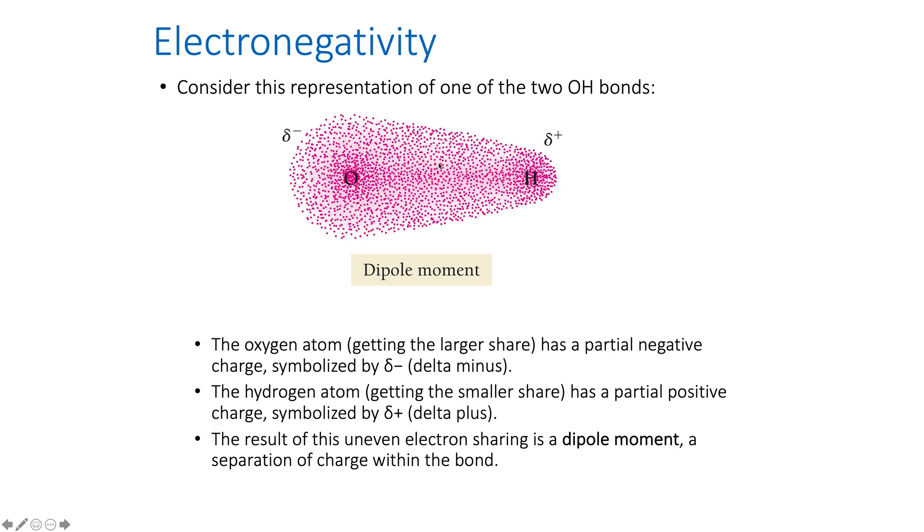We say partial because electrons are not completely transferred. They're just held closer to one than the other. For the purposes of this class, if you just want to write negative and positive, that's fine. But it's important to know which side is the negative and which side is the positive.